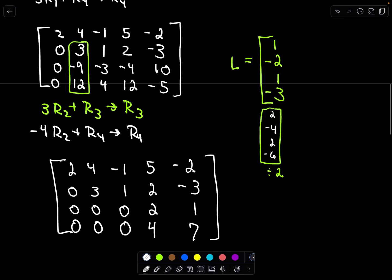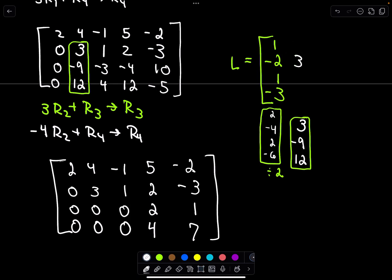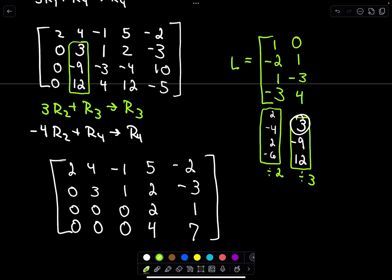Now we do the same thing we did before for these entries. I don't want to put a 3 here because that's not going to be a 1. So I simply divide everything in that column by 3. 3 divided by 3 is 1, negative 9 divided by 3 is negative 3, 12 divided by 3 is 4. And above that we simply put a 0.